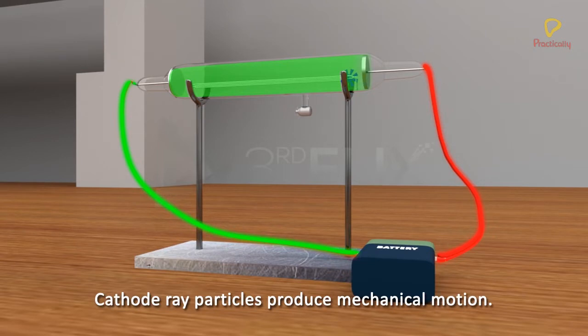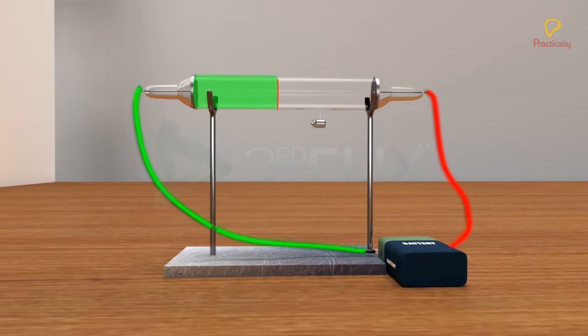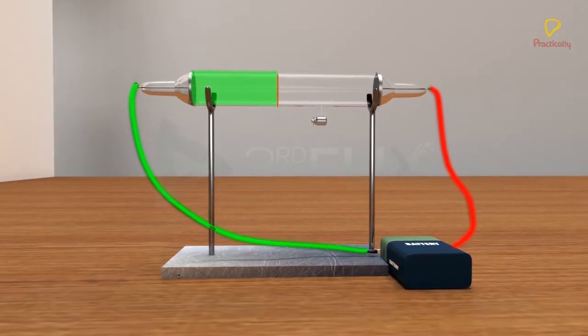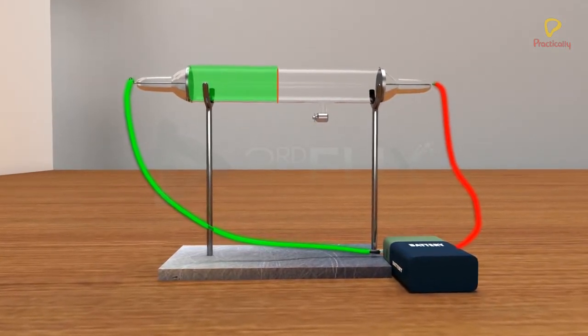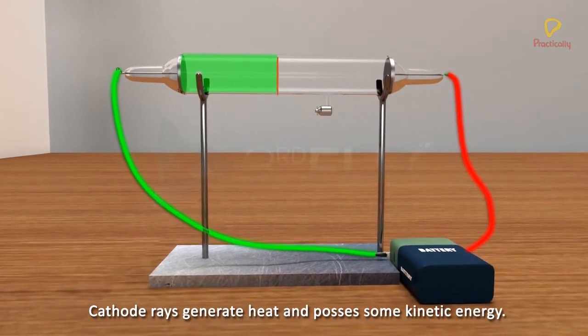He also observed that a metal foil when placed in the path of cathode rays becomes hot. He then concluded that as cathode rays generate heat, they must possess some kinetic energy.